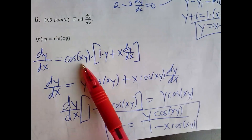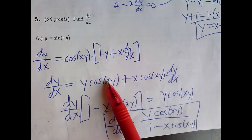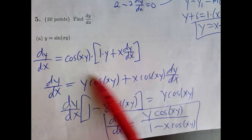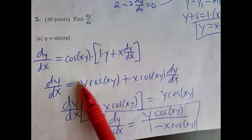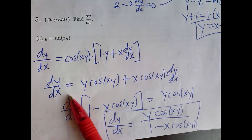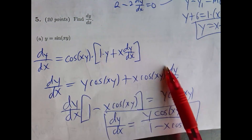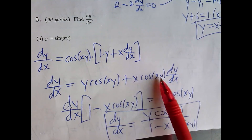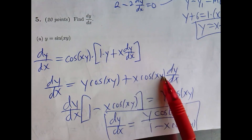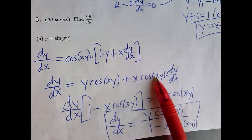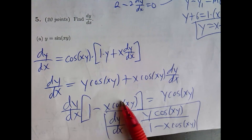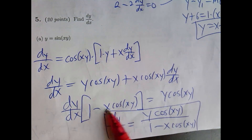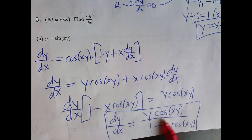So you distribute: derivative of the first (which is 1) times the second, plus the first (x) times the derivative of the second (dy/dx). Then you want to get everything with dy/dx on one side by itself. Subtracting that piece over puts us here, then you can factor out dy/dx and just divide by that — and that's the final answer.